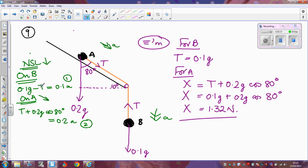So adding them together, the T's are going to cancel, minus T here, plus T here, so I've got 0.1g plus this bit, so 0.2g cos 80 degrees, and that's going to equal 0.1a plus 0.2a, well, that's 0.3a. In fact, I've realised that this is the same as this over here, which I've already worked out.